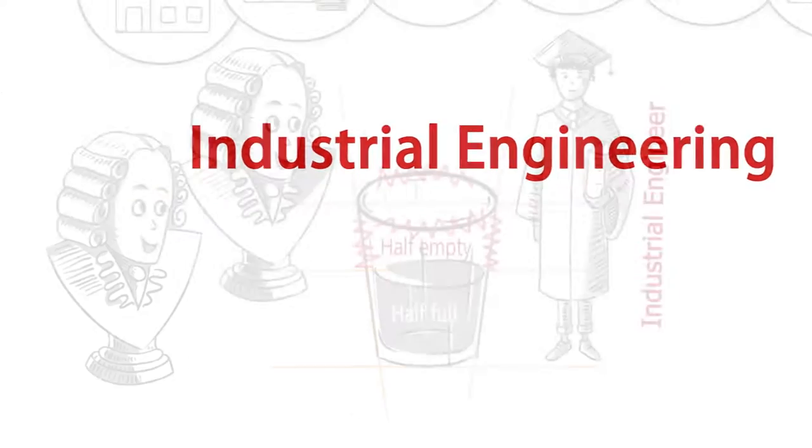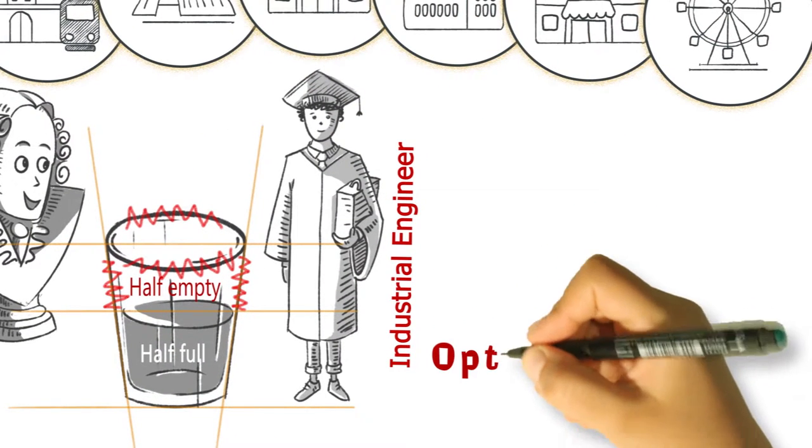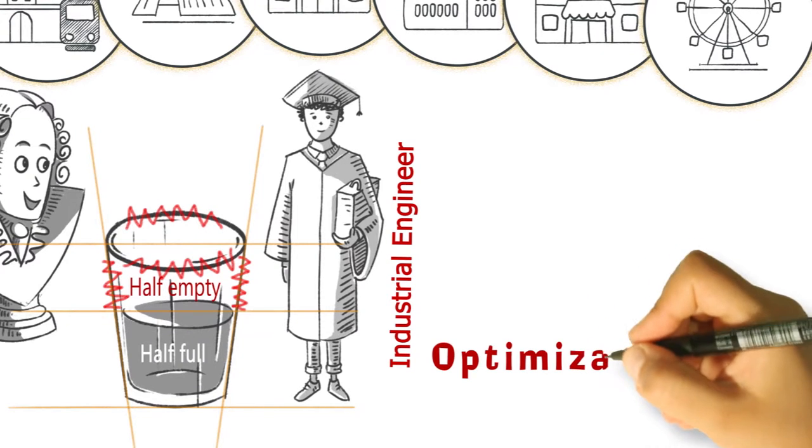Industrial engineering focuses on the optimization of complex systems and processes. Therefore, the primary mission of industrial engineering is optimization.